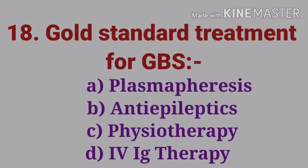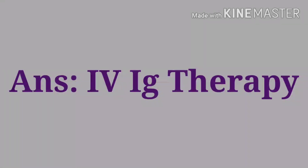The eighteenth question: gold standard treatment for Guillain-Barré syndrome — options are plasmapheresis, anti-epileptics, physiotherapy, and IV immunoglobulin therapy. The answer is IV immunoglobulin therapy. The gold standard treatment for Guillain-Barré syndrome is IV immunoglobulin therapy.